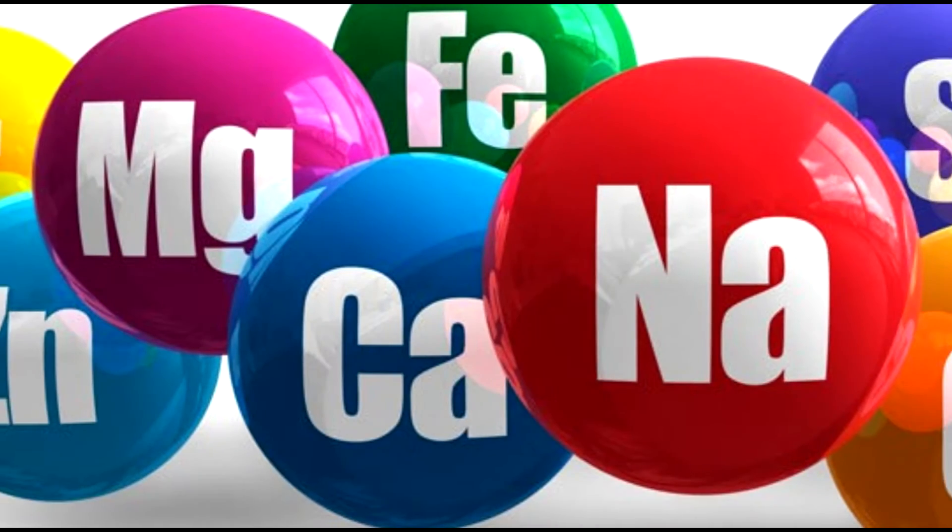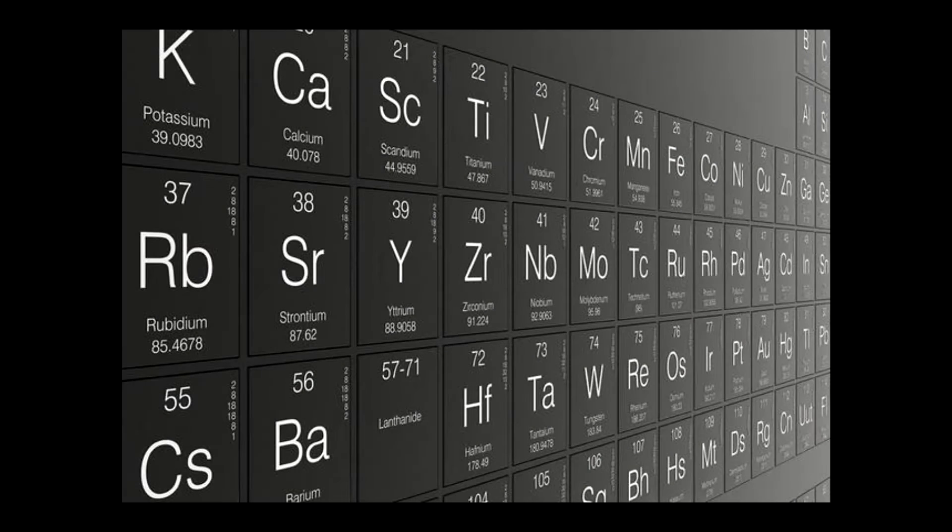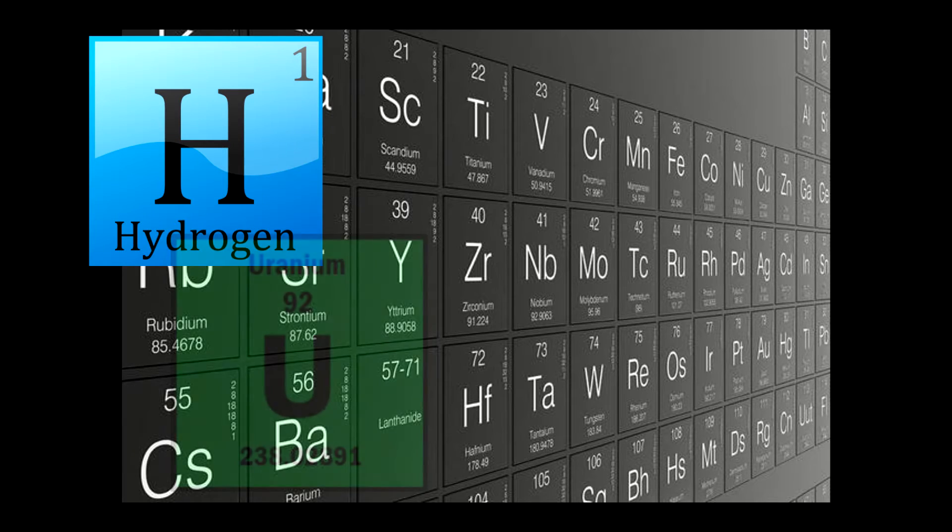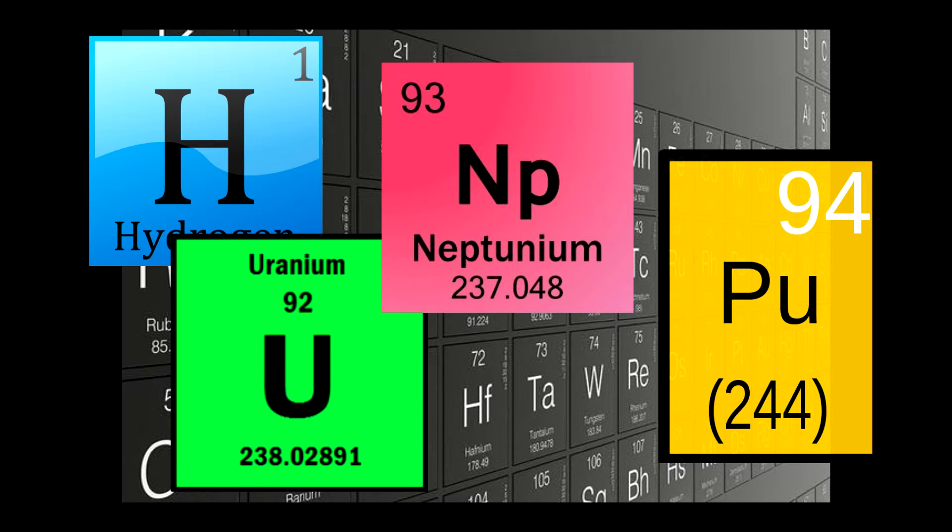The underlying kinds of stuff are the first stuffs, which link together in sundry ways to give rise to the rest. Formerly we knew of 92 first stuffs, from waterstuff, the lightest and barest, to ymirstuff, the heaviest. Now we have made more, such as eigerstuff and helstuff.